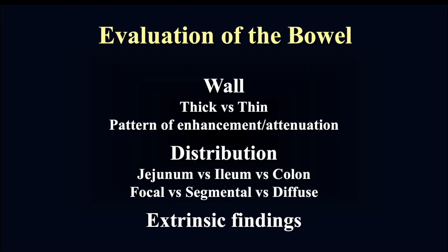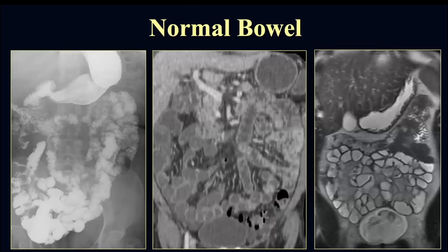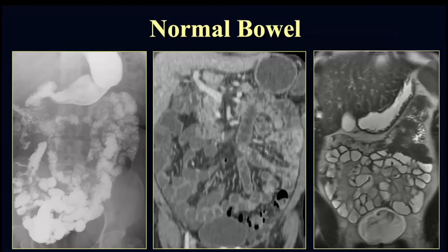Before we get too deep into the weeds, remember we always need to take a step back and decide what is normal. Here you'll see a small bowel follow-through fluoroscopic examination, a CT coronal view, and an MR T2-weighted coronal view of the bowel. I like to use this image to emphasize the value of coronal imaging when evaluating the bowel, because you see much more bowel on a single image, making you more sensitive to detecting abnormalities in bowel caliber, wall thickness, and enhancement.